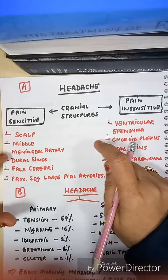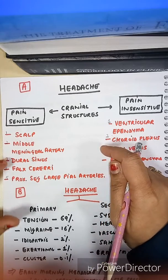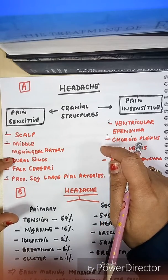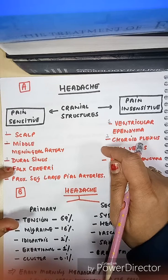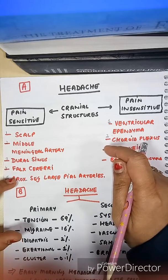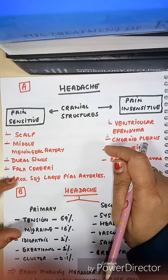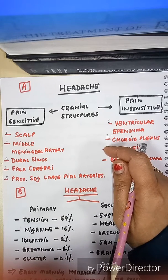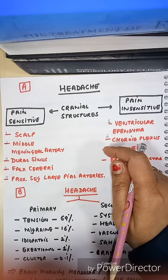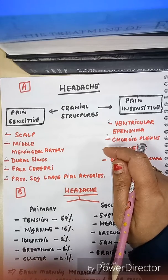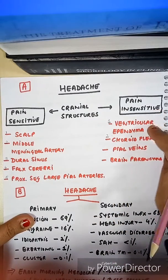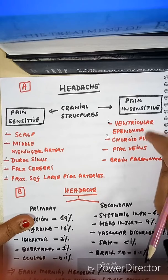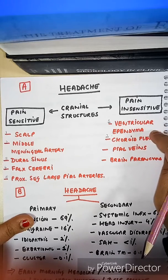The pain-sensitive cranial structures are: scalp, middle meningeal artery, dural venous sinuses, falx cerebrae, and the proximal segment of the large pial arteries. Remember these: scalp, middle meningeal artery, dural venous sinuses, falx cerebrae, and proximal segment of large pial arteries.